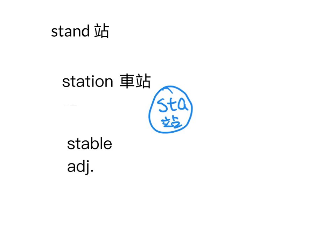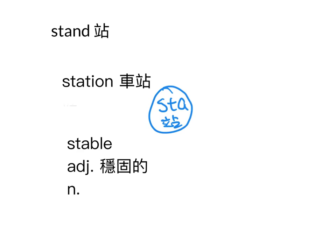接下来这个字相当重要：stable，这个单字是形容词，你可以想象就是能够站住的，所以有稳固的意思，或者是稳定的。stable除了稳固之外，还有另外一个解释，就是一直站着——马厩的意思。